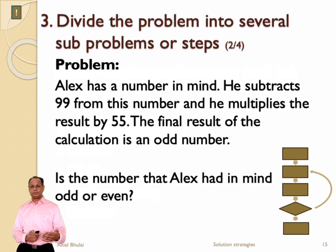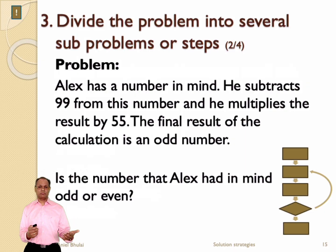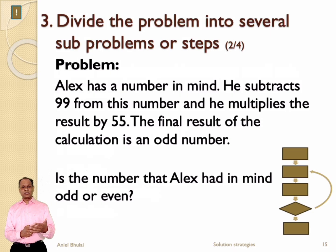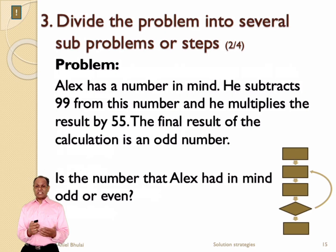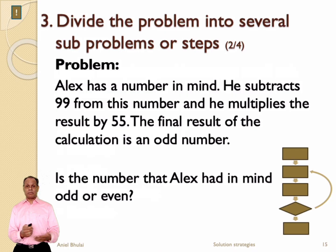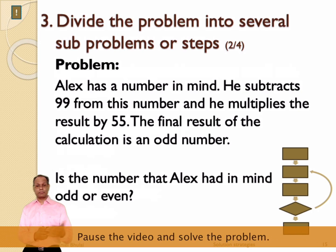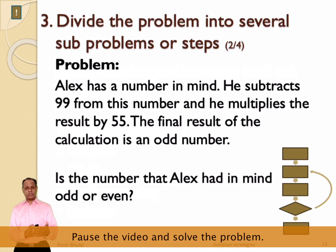Consider the following example. A person named Alex has a number in mind. He subtracts 99 from this number and multiplies the result by 55. The final result is an odd number. The question is: did Alex have an odd number or an even number in mind? Pause the video and try to solve this by dividing the problem into several sub-problems, following the problem-solving scheme we discussed.